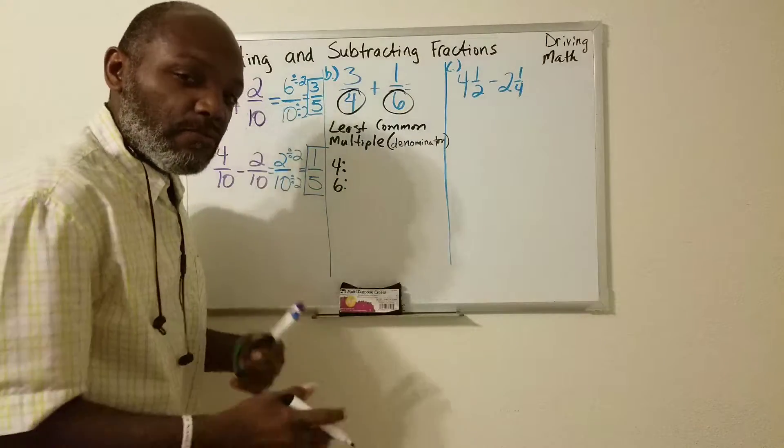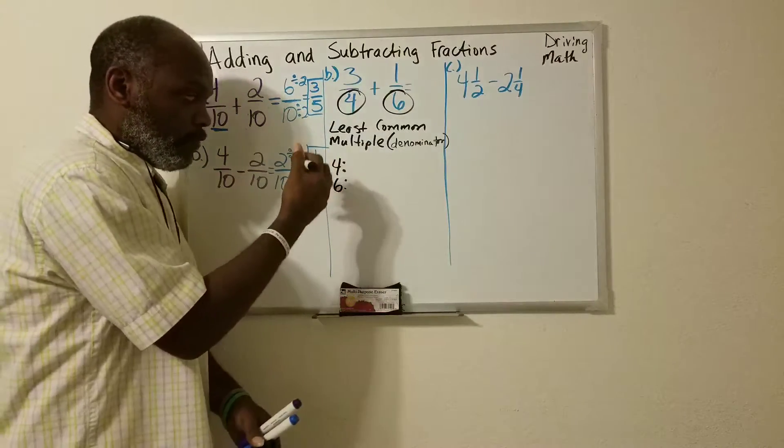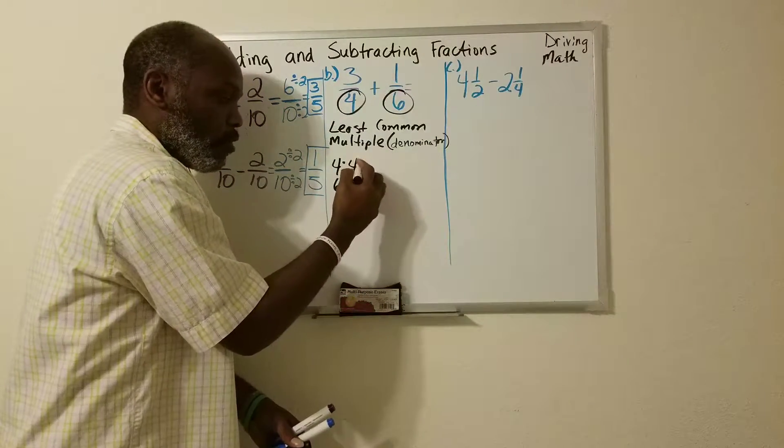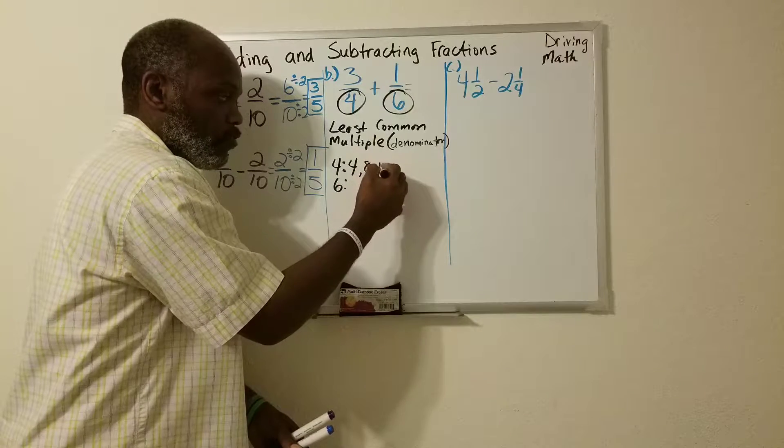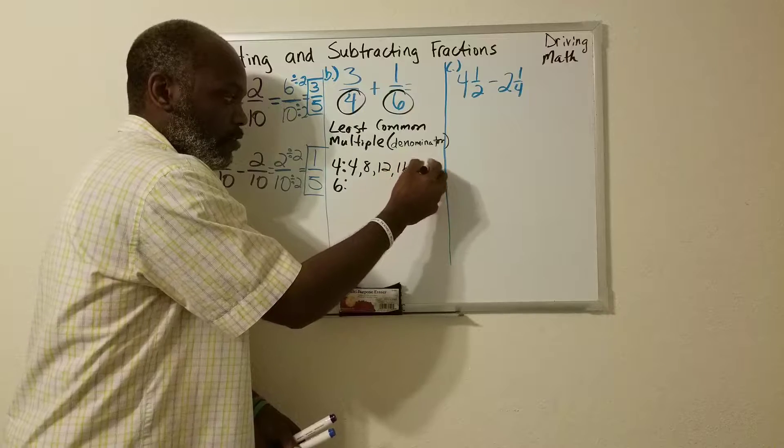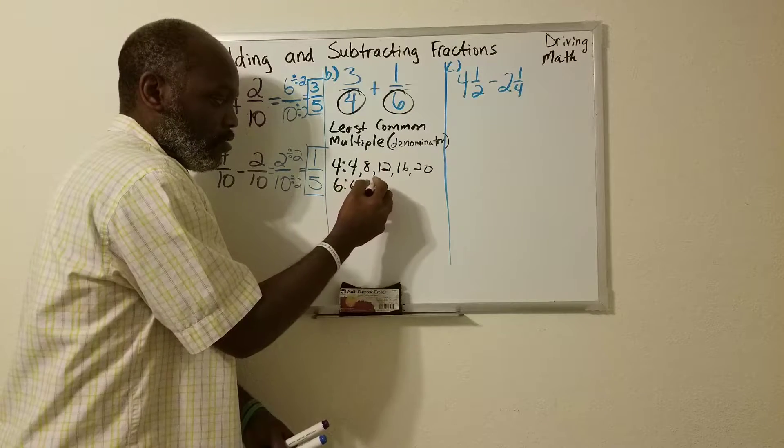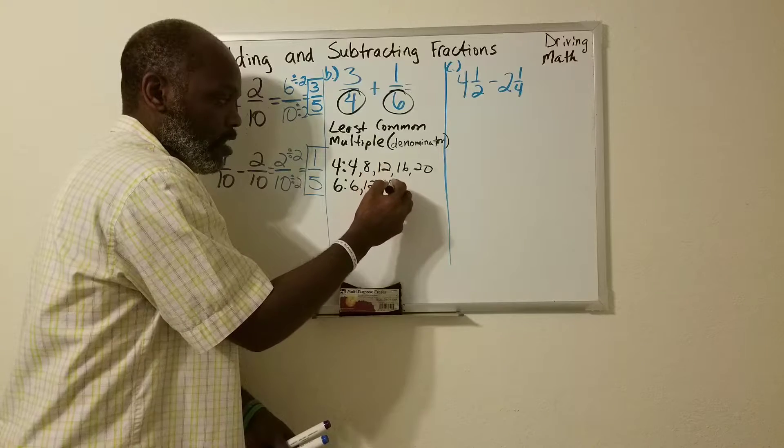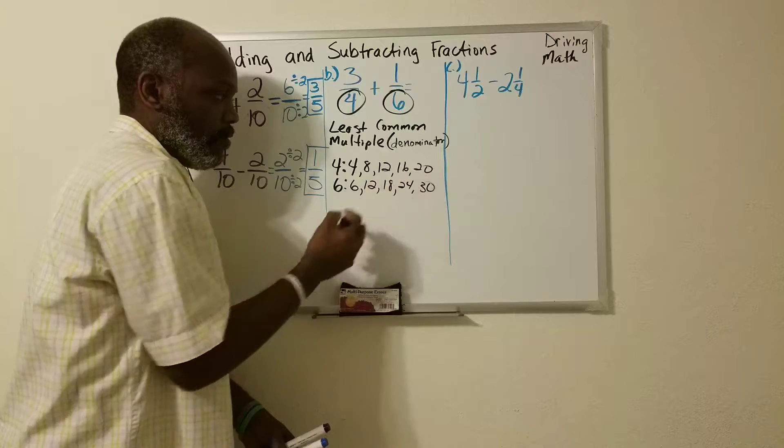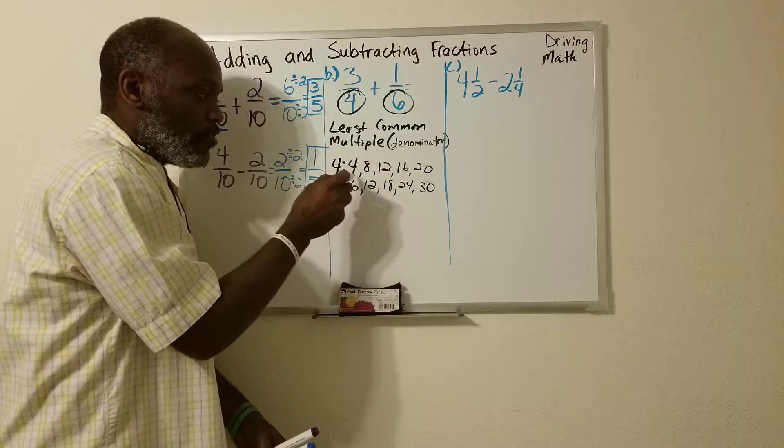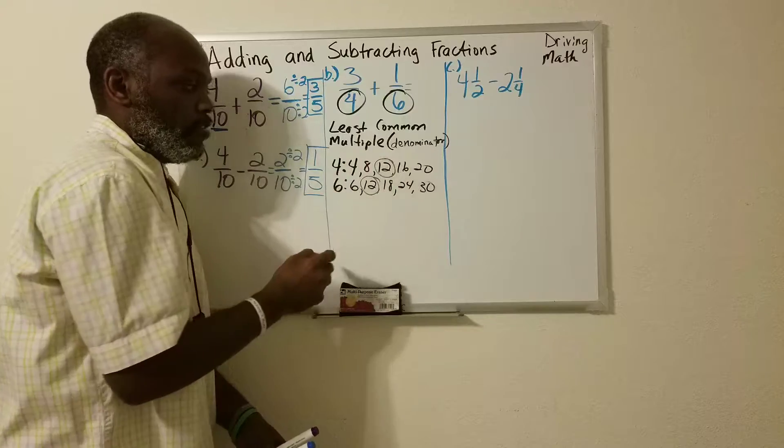So we're going to count the multiples of 4. The multiples of 4 are 4, 8, 12, 16, 20. Multiples of 6 are 6, 12, 18, 24, 30. Now the least common that they have, the least common is 12.